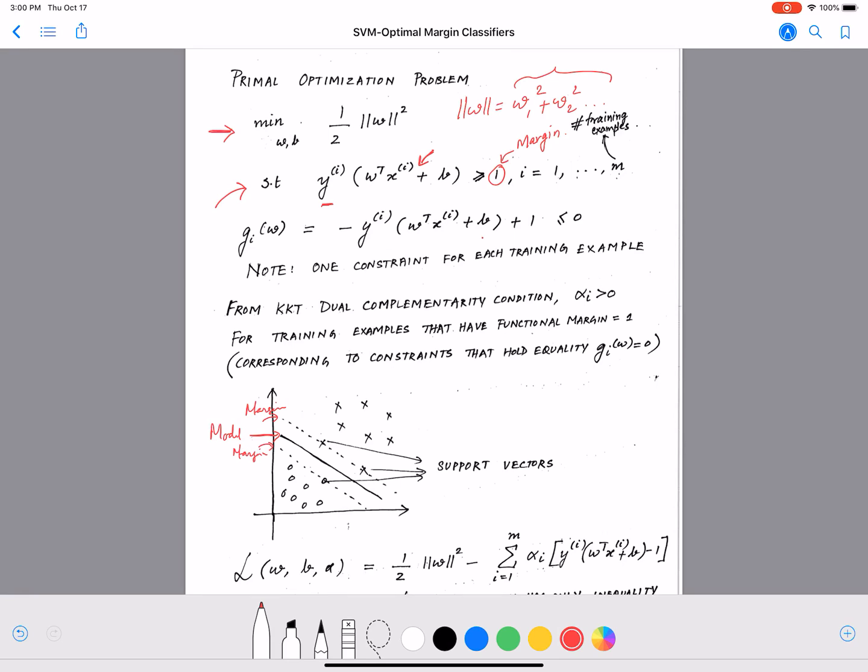Which means that we want to make our line as away as possible from the data points so we get a clear separation in the data, and this will generalize better at test time. So that's what we want and this is what we are capturing.